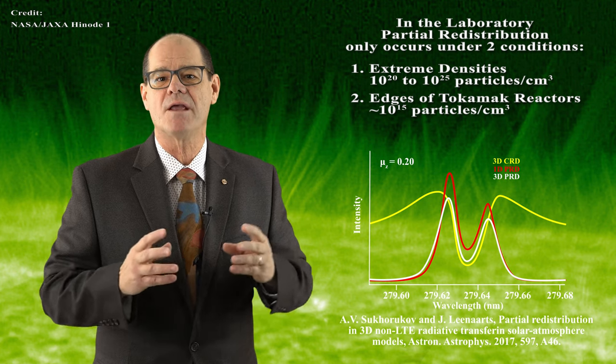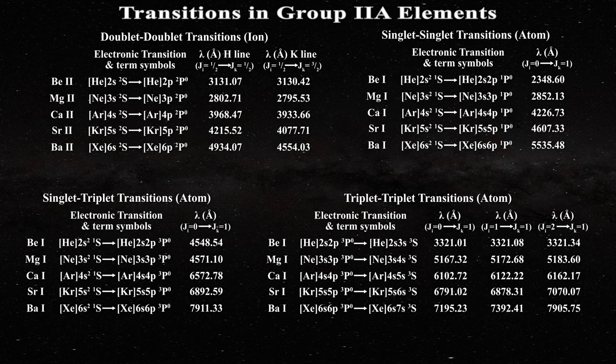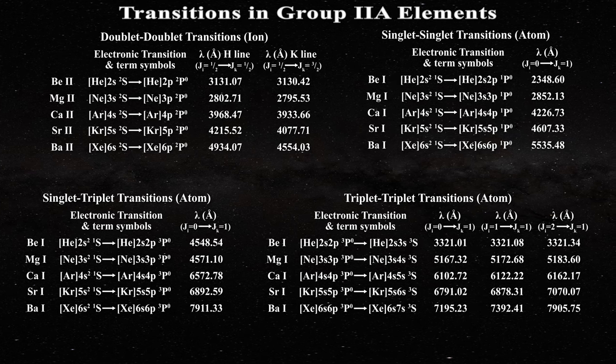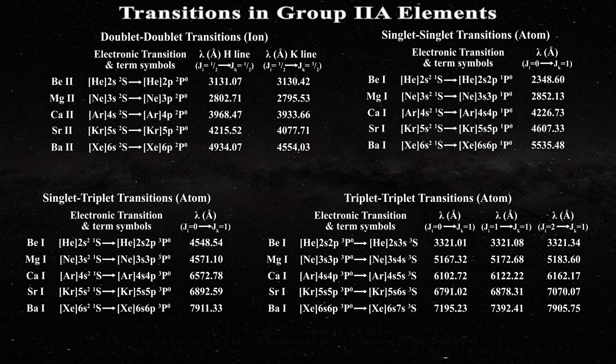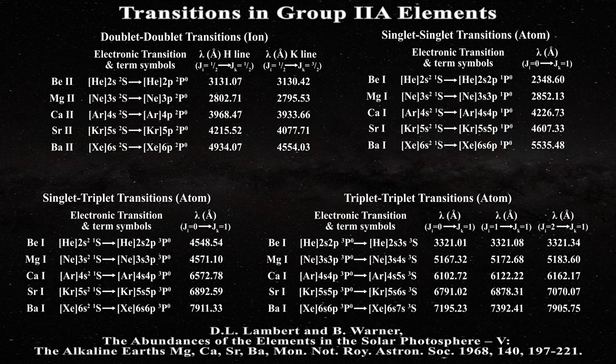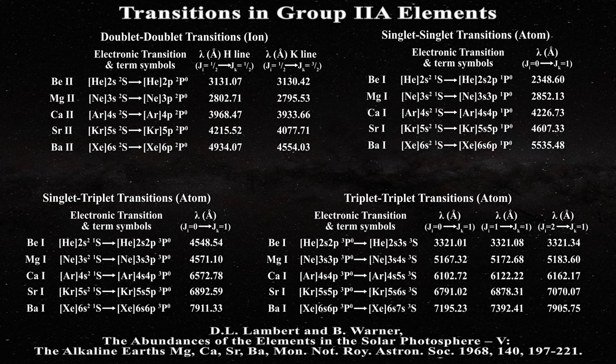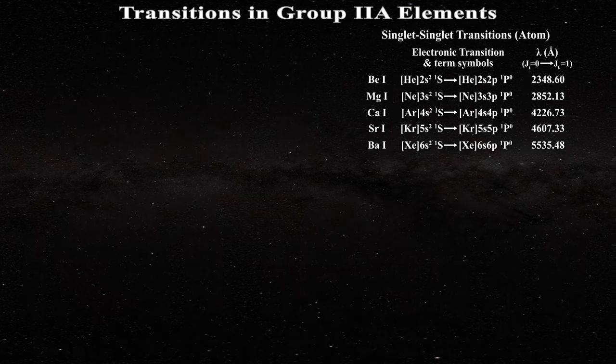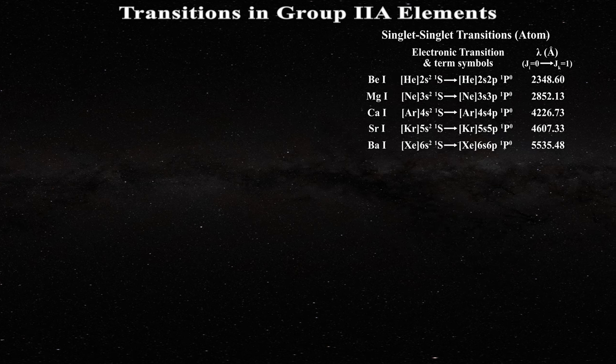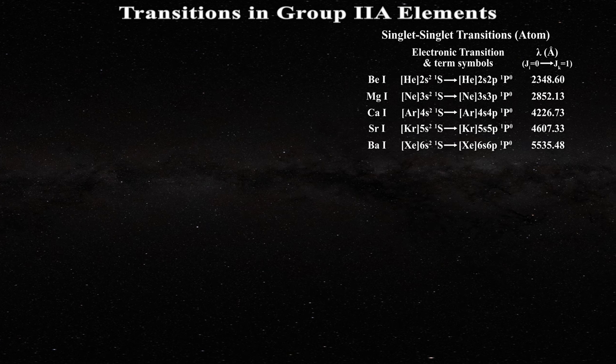You recall that in the first video on the group 2A elements I had presented these tables summarizing the main transitions we will discuss. Together magnesium and calcium are responsible for well over 100 transitions taking place on the sun, as one can learn in this paper. But the analysis is best served by focusing on just these few transitions and continuing with the singlet to singlet transitions for the neutral atom. For the Fraunhofer, these transitions are much less broad than those noted previously for the calcium 2 or magnesium 2 H and K lines.